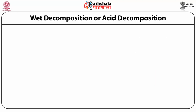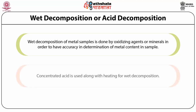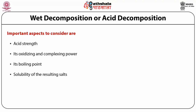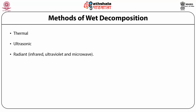Wet decomposition or acid decomposition uses oxidizing agents or mineral acids like H₂SO₄ or HCl for decomposition of metals in samples to achieve accuracy in atomic absorption spectroscopy determination. Concentrated acids are used along with heating. Important aspects to consider before carrying out wet decomposition include acid strength, oxidizing and complexing power, boiling point, solubility of the resulting salt, safety in manipulation, and purity. Various methods of wet decomposition include the thermal method, ultrasonic method, and radiant methods including infrared, ultraviolet, and microwave.